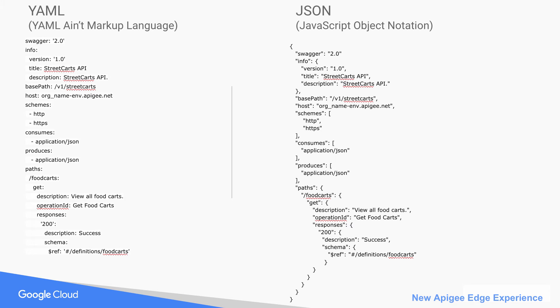This slide provides a side-by-side comparison of the same content represented using YAML and JSON.